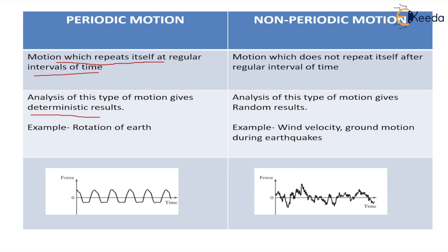The opposite of this is motion which is not repeating itself after regular intervals. After irregular intervals the motion is occurring, and whether it will repeat or not, we do not know. Therefore, analysis of such motion is not possible, or in some cases very difficult, and the results we get from their analysis are random. You don't know what results you are going to get.